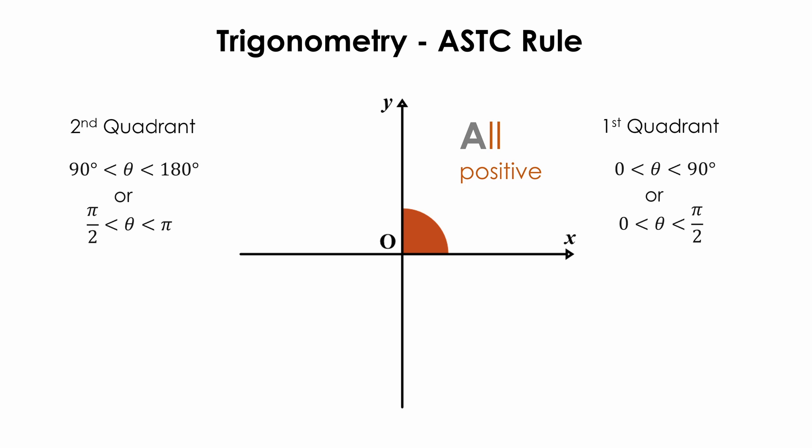In the second quadrant, theta lies between 90 to 180 degrees, or between π/2 to π. In this quadrant, the sine of any angles is always positive, and the cosine or tangent of the angles will be negative.